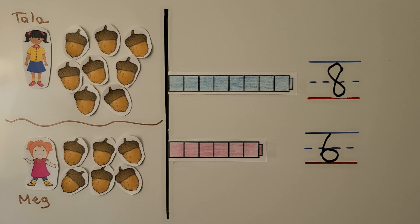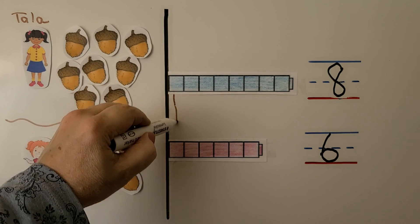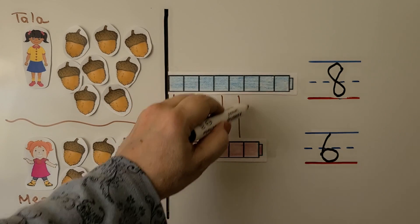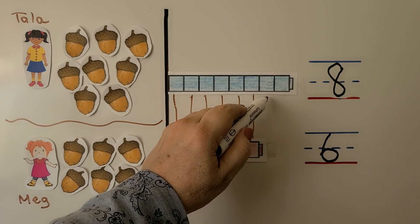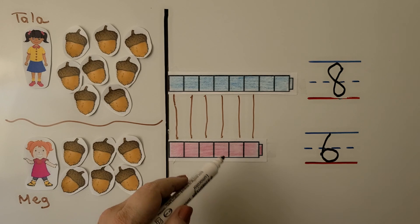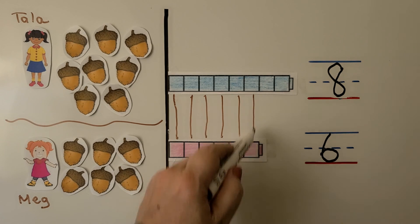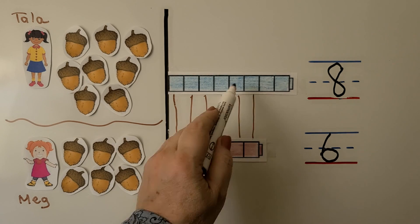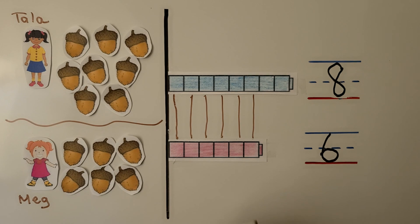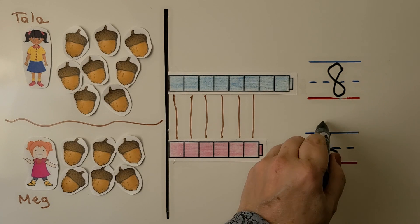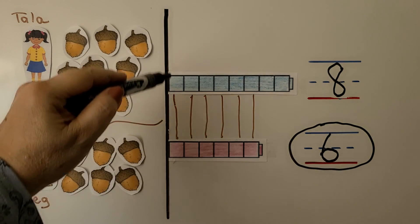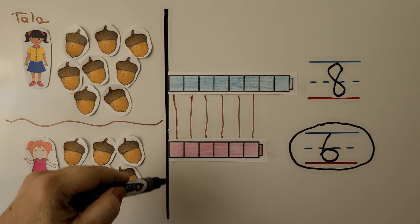Then we can draw lines to match the cubes to compare them. We've got one, two, three, four, five, six. But this one has two left over. This one is shorter. This cube train is shorter than this one. There are fewer cubes here. See how this one's sticking out and this one's not? So that means six is fewer than eight. There aren't as many cubes in the cube train. When we make our cube train, it's very important that they start at the same place, so we can line them up against a black line like this.